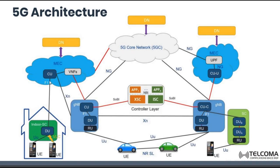Here we have a Mobile Edge Computing (MEC) cloud, which has a Control Unit and Virtual Network Functions. This is also connected to an indoor secondary cell, which may be operating in a particular house and giving services to different UEs and equipment. In the indoor secondary cell, we have a Distributed Unit which can connect through UU and also through visible light communication.